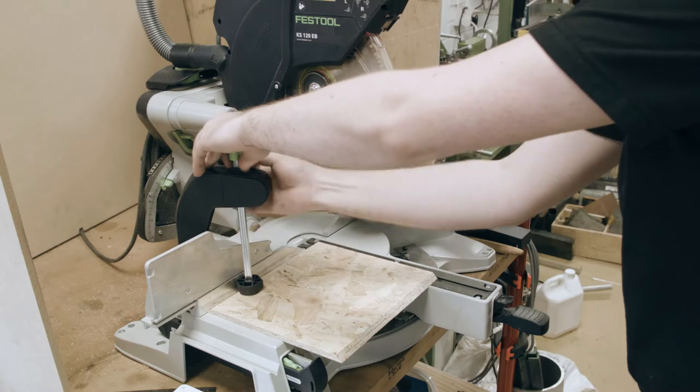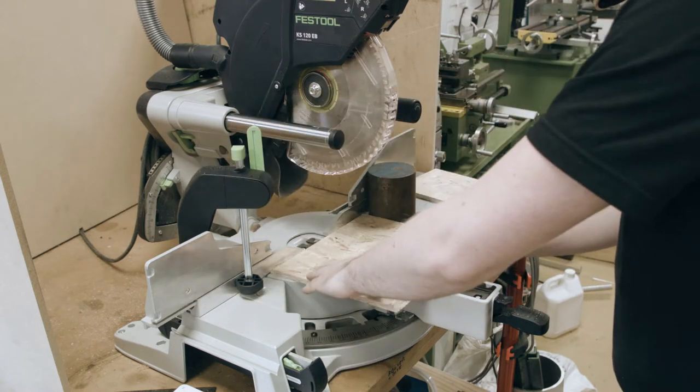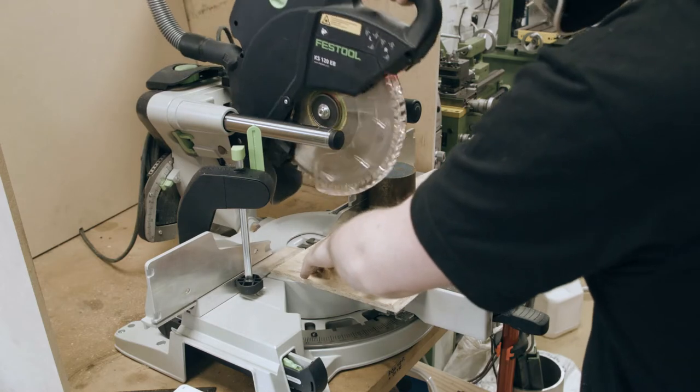You can see I've used a round of metal here to act as a stop block so I can just push the wood up against the edge and know that the two pieces I've cut will be the same size.